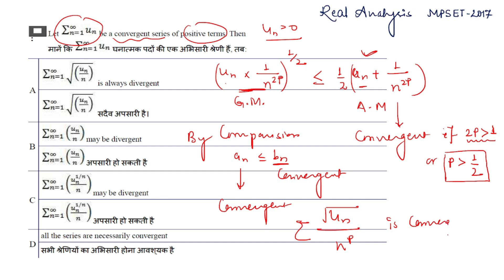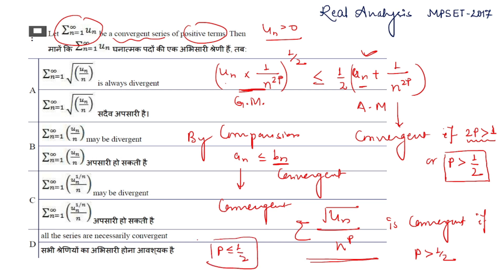So √(uₙ)/n^p is convergent if p > 1/2. Here we have proved that if p = 1/2, this form is divergent. So this series √(uₙ)/n is always divergent. Option A is correct.